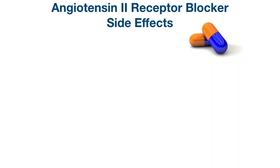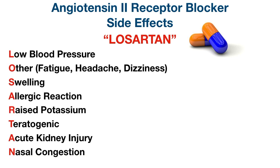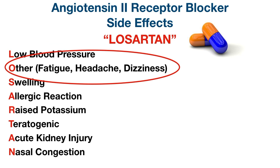Let's move on to side effects of angiotensin 2 receptor blockers. I came up with the mnemonic LOSARTAN to make it easy to remember the main side effects. L stands for low blood pressure, which makes sense because ARBs treat hypertension. This is especially true when first starting an ARB or when taking multiple antihypertensive medications — so monitor blood pressure carefully. O stands for other general mild to moderate symptoms such as fatigue, headache, and dizziness.